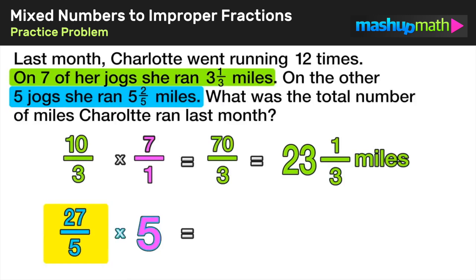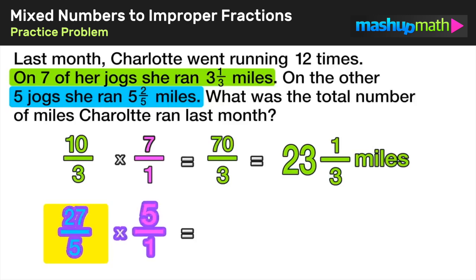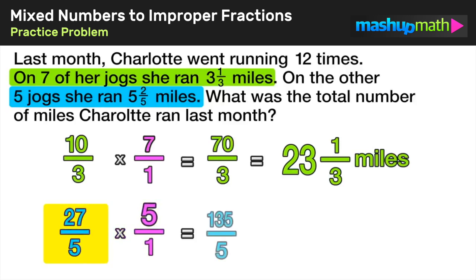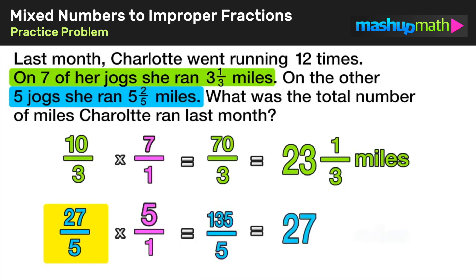Now we multiply twenty-seven over five by five. We rewrite five as five over one, then multiply numerator times numerator over denominator times denominator, which gives us one hundred thirty-five over five. Dividing one hundred thirty-five by five gives us twenty-seven with no remainder, so the total on those five runs was twenty-seven miles.